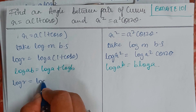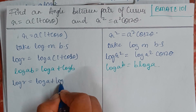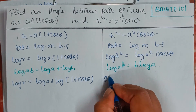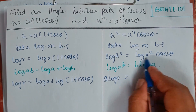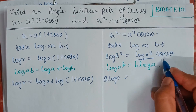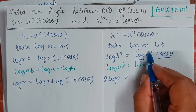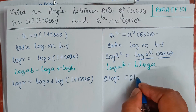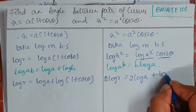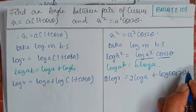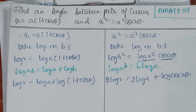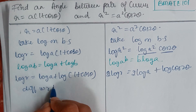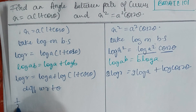We expand these logs. So the first equation gives: log r = log a + log(1 + cos θ). The second equation gives: 2 log r = 2 log a + log cos 2θ. The expansion is done. Now we will differentiate with respect to θ.